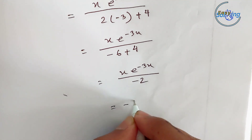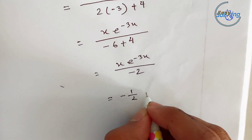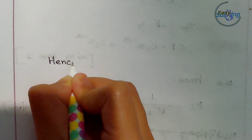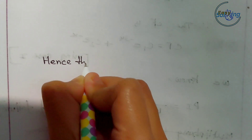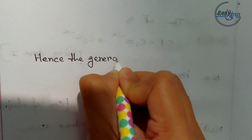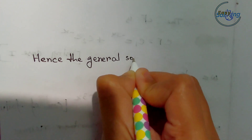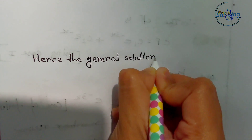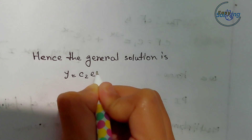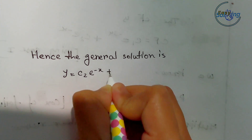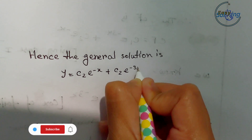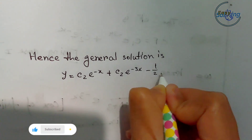Substituting D equals minus 3, the PI equals x times e to the power minus 3x divided by 2 times minus 3 plus 4, giving minus x by 2 times e to the power minus 3x. Hence the general solution is: y equals C1 e to the power minus x plus C2 e to the power minus 3x minus one-half x times e to the power minus 3x.